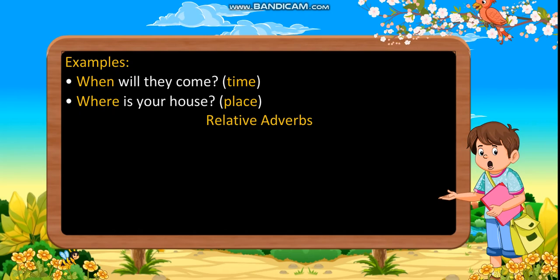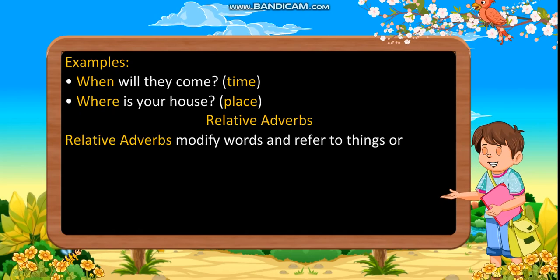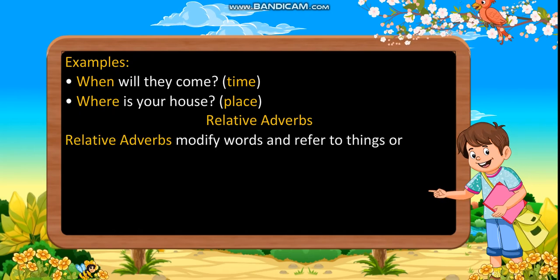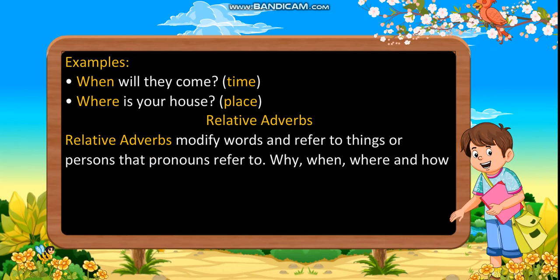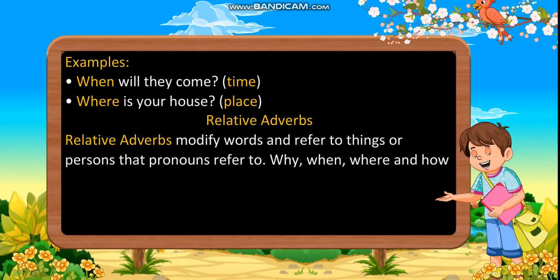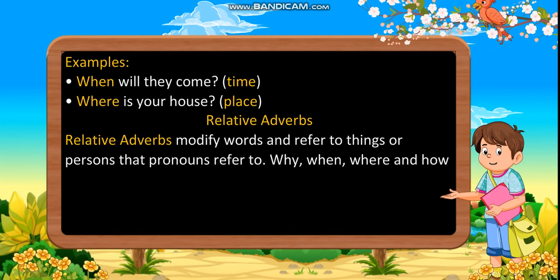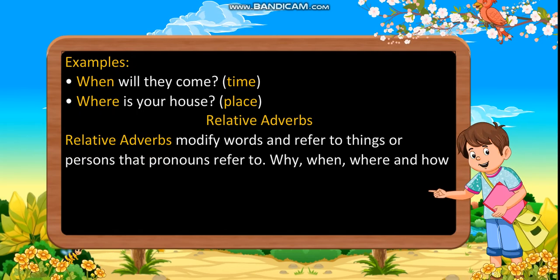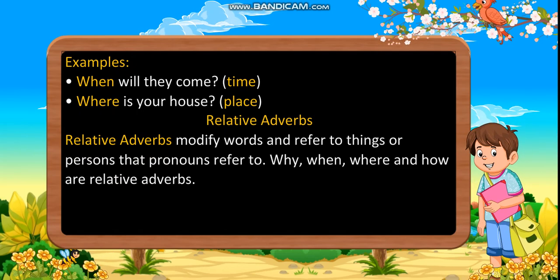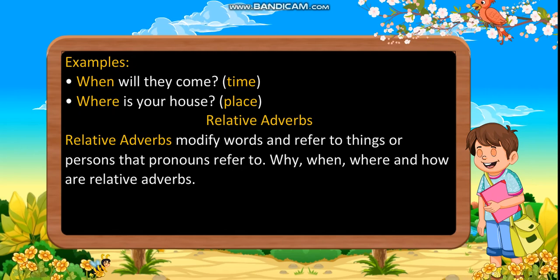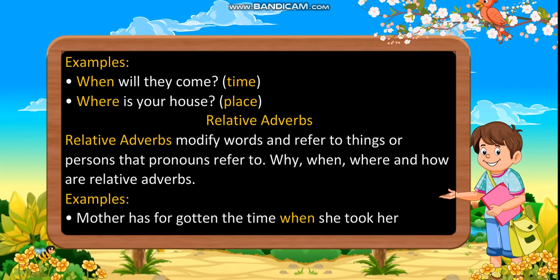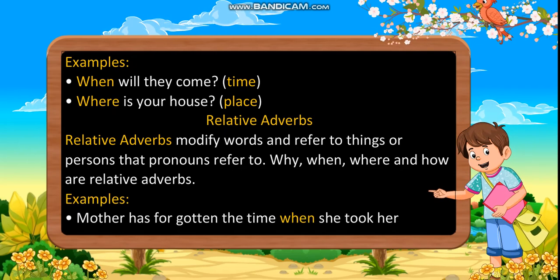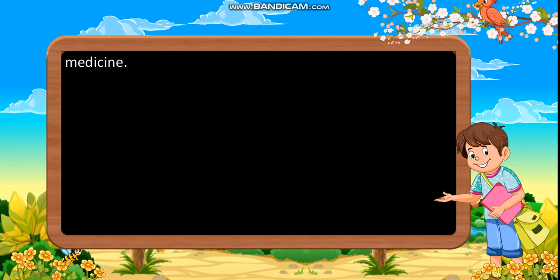Relative adverbs modify words and refer to things or persons that pronouns refer to. Why, when, where, and how are relative adverbs. For example: Mother has forgotten the time when she took her medicine. I have no idea how the fly got into the pan.